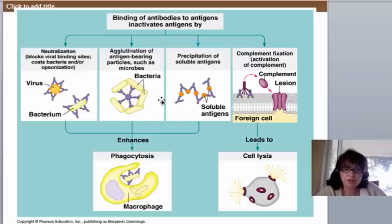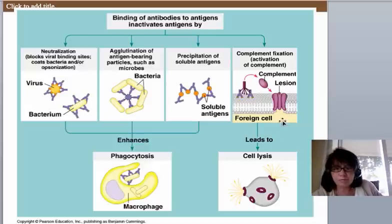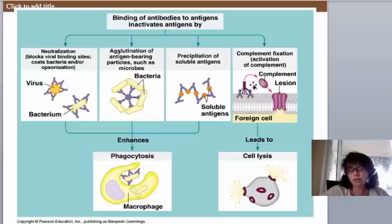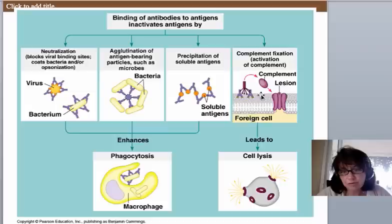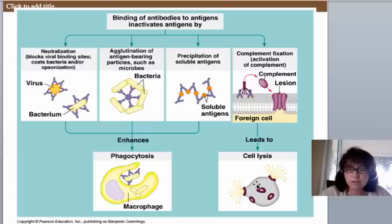Antibodies can also clump pathogens together through agglutination. Lastly, antibodies can attract proteins called complement — a series of serum proteins always floating in your blood. If antibodies land exactly the right distance apart on a foreign cell, such as a bacterium, complement proteins are attracted and start a cascade of activation, ending in a series of proteins that embed themselves in the cell membrane, make a hole, and the cell lyses.